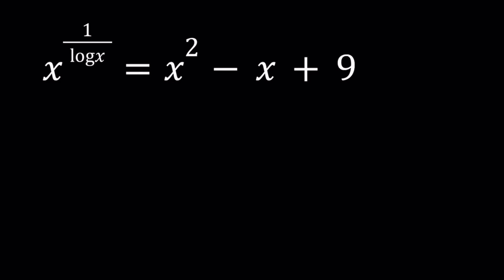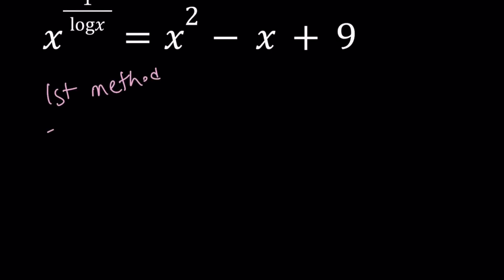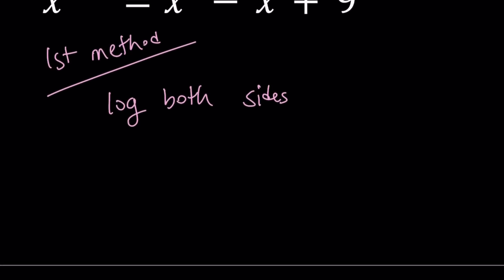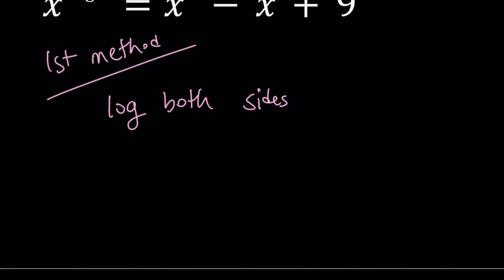And I know some of you have said we've seen this before. So I'm going to introduce two methods. For my first method, I'm going to log both sides. And when I say log, I mean base 10, not ln. You could definitely use ln but I don't think that's going to be very helpful. If you log both sides, you get log x to the power 1 over log x. This is where it breaks down, sort of, and you get the idea.